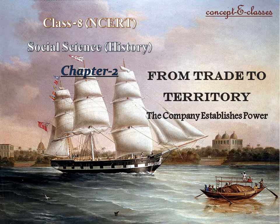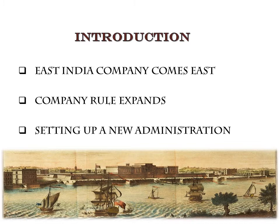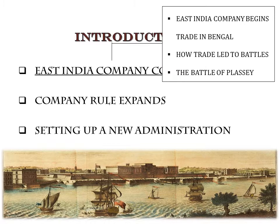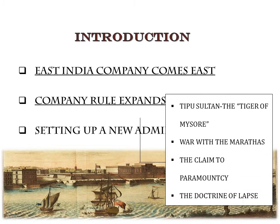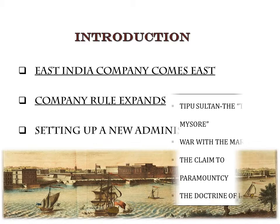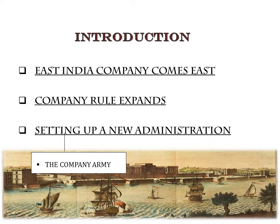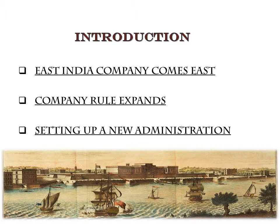This is Concept E Classes, and today we will deal with Chapter 2 of Class 8 Social Science History: From Trade to Territory - The Company Establishes Power. We will study how the East India Company began their trade in Bengal, how trade led to battles including the Battle of Plassey, how company rule expanded over India covering Tipu Sultan, War with Marathas, the Claim to Paramountcy, the Doctrine of Lapse, and finally how the company set up a new administration through its army.